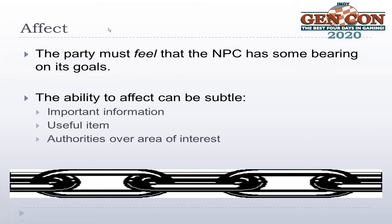Next is A for Affect. If NPCs are going to be memorable — and our goal is to create memorable NPCs, not just random ones — the party or the reader has to feel that that NPC has some bearing on the goals of the novel or game. There has to be some attached importance to investing the emotional energy to get to know that NPC.